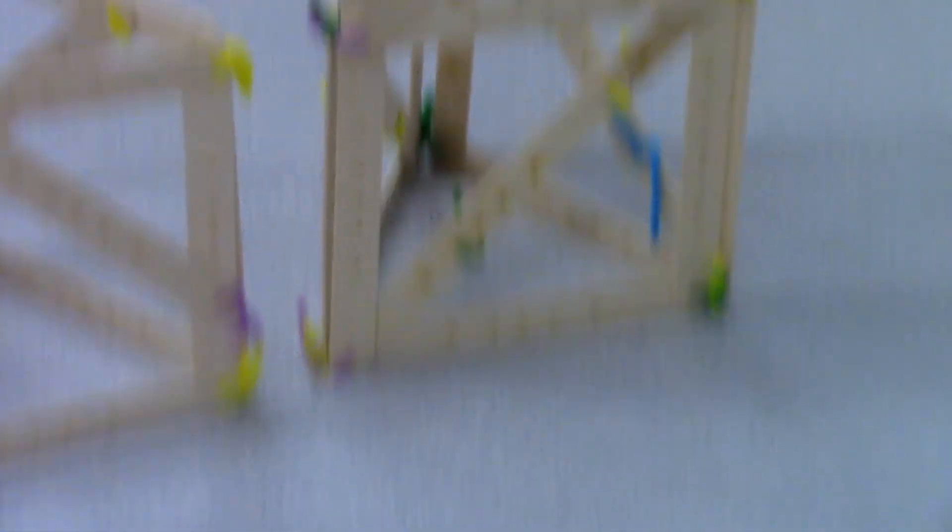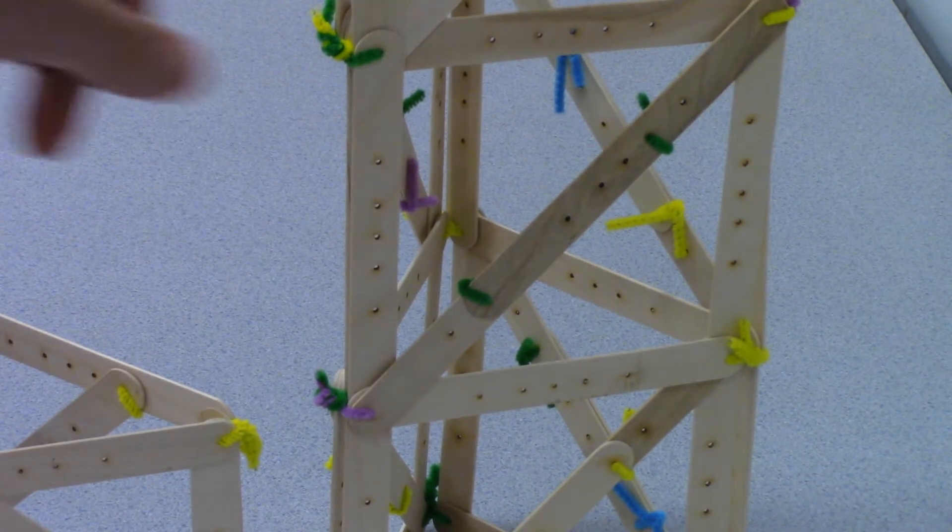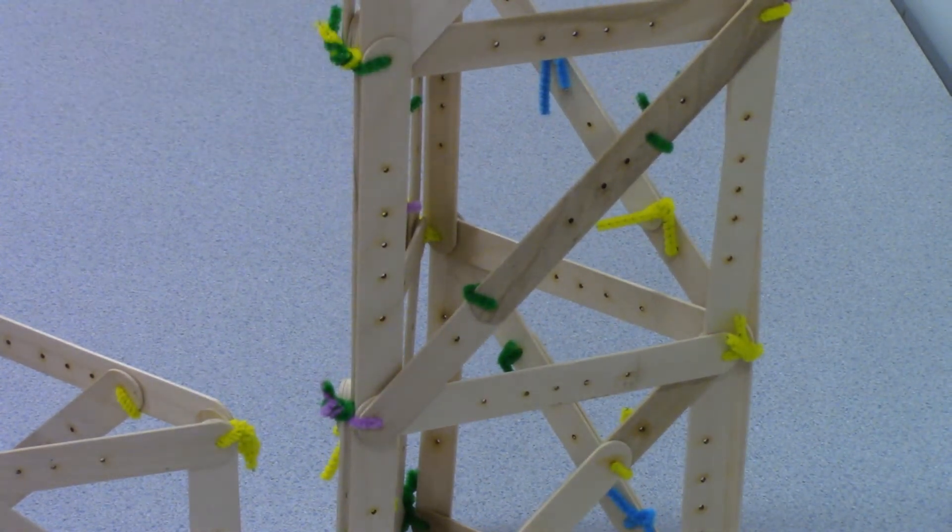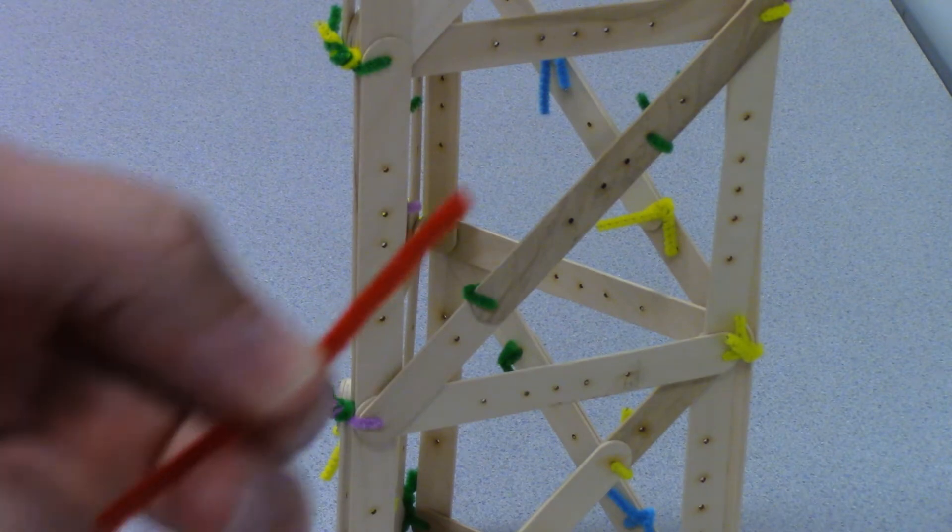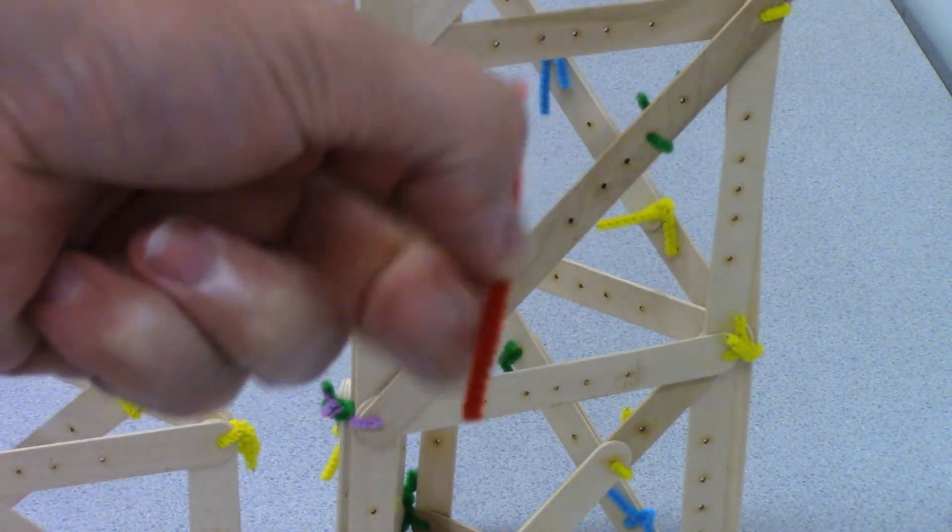All right so what you do is you build them on each side and then you twist tie them together. So these pipe cleaners are really handy and I just cut them into fourths and just use these.